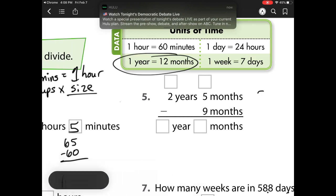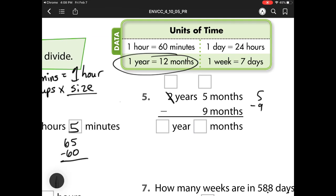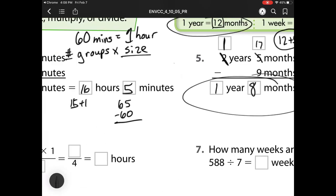So here we have 5 minus 9, but we can't do that, so we have to regroup. So I'm going to borrow from this 2, so that will become 1 year, and I'm getting now 12 months for 1 year, and I already have 5 months, so I'm adding those together. So I now have 17 months. 17 minus 9 is 8. 1 minus 0 is 1. So that is 1 year and 8 months.